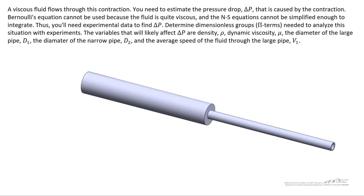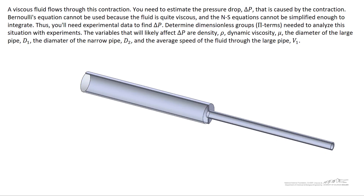In this problem we've got fluid flowing from a large pipe through a contraction into a smaller pipe. We're trying to figure out the pressure drop associated with the contraction, just upstream and just downstream of where the two pipes are combined. Because the fluid is somewhat viscous, we can't use Bernoulli's equation, and because the flow isn't a very simple flow, we can't simplify the Navier-Stokes equations and just integrate them. So we have to rely on experimental data, and the goal is to figure out what dimensionless groups we could use to analyze this situation.